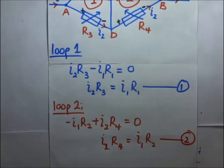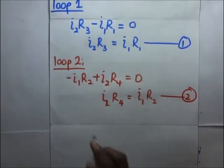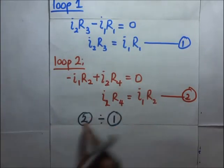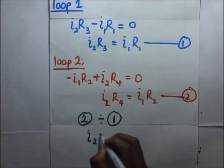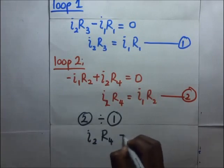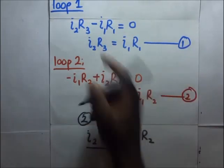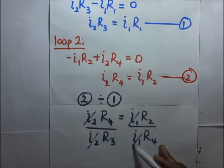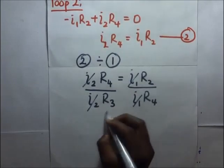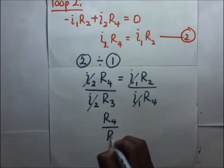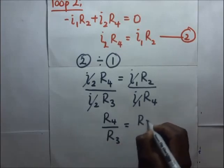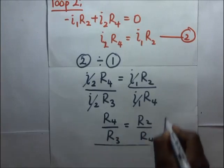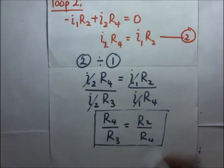To get the balance condition, we divide Equation 2 by Equation 1. Equation 2 is I2·R4 = I1·R2, and Equation 1 is I2·R3 = I1·R1. Dividing gives R4/R3 = R2/R1. This is the balance condition for the Wheatstone bridge, derived using Kirchhoff's laws.